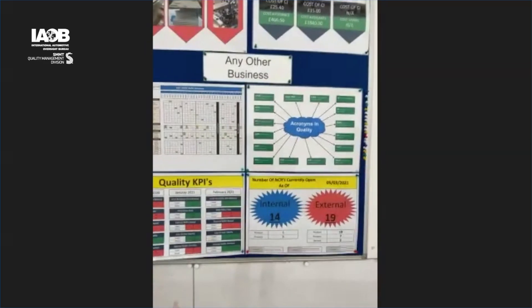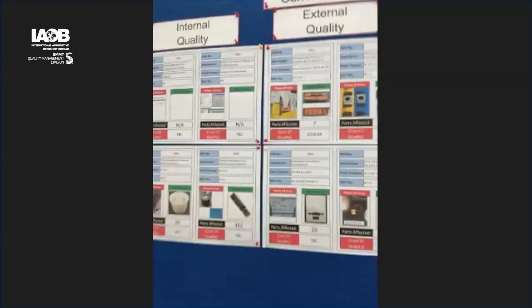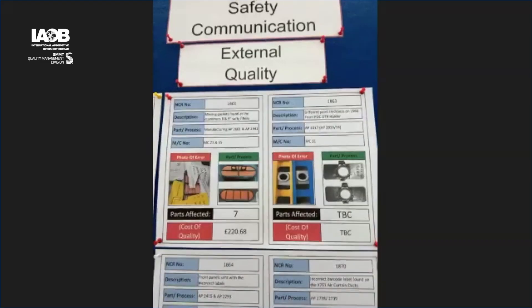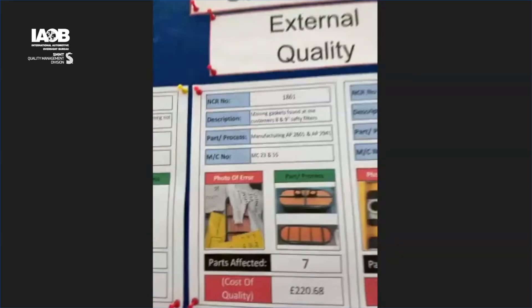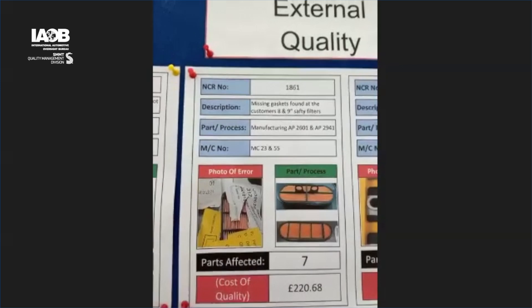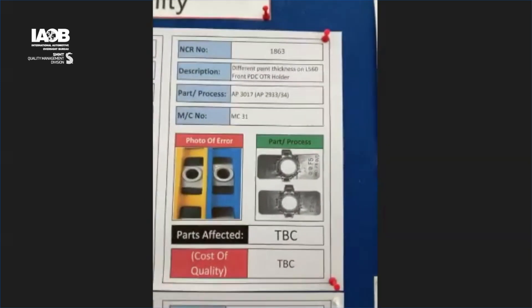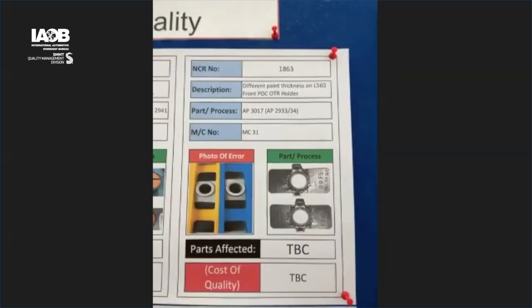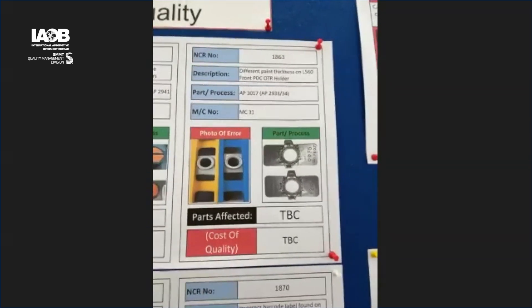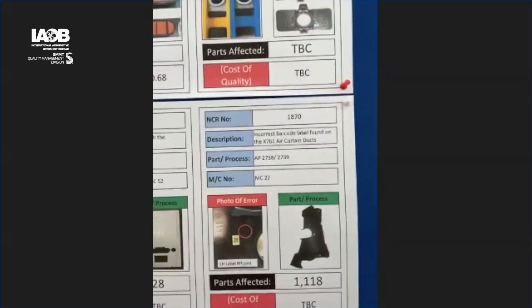Can you zoom in for me on the customer performance on the previous board? In terms of the internal and external NCRs — take me to the external if you can. So what are the last related quality issues you have recorded? So again on the board we need to do the update, so some of these will be past tense. We've got the missing gaskets on the safety filters, looking at what corrective action is going to be done on them. We've got the paint thickness on the PDC holders for the customer Plastic Omnium — the paint isn't adhering to the product correctly. And then we also have the incorrect barcode label found on the air duct curtains.